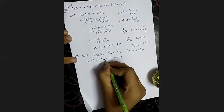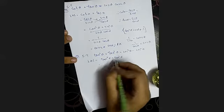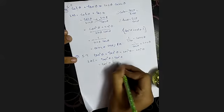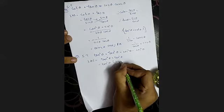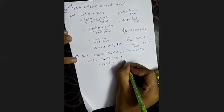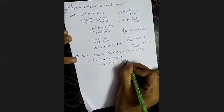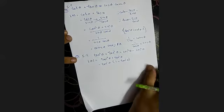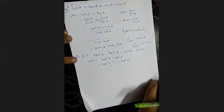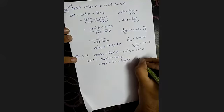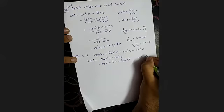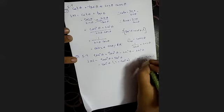Now, what can we take common? We can take tan squared theta as common. So I'm going to take tan squared theta as common, and 1 plus tan squared theta will be left. Now, what is 1 plus tan squared theta? Secant squared theta minus tan squared theta is equal to 1.